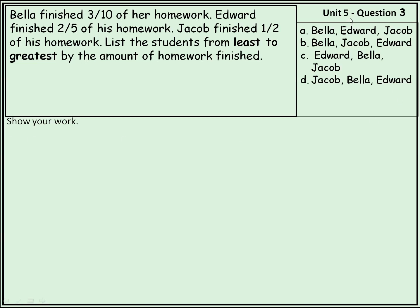Unit 5 Question 3. Bella finished 3 tenths of her homework. Edward finished 2 fifths of his homework. Jacob finished one half of his homework. List the students from least to greatest by the amount of homework finished.